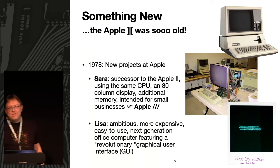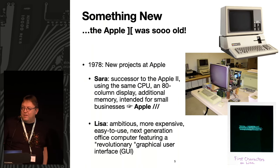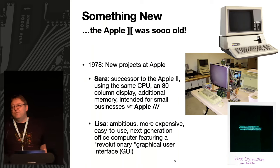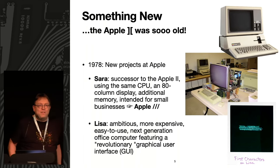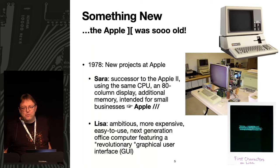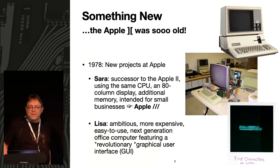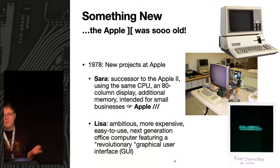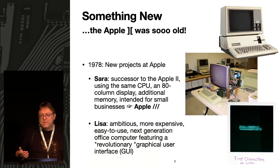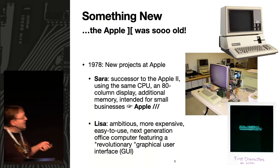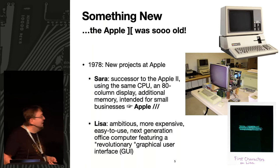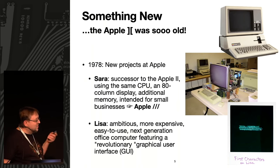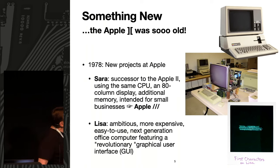Then there was Lisa. If you look at the official Apple explanation, it stands for 'Local Integrated Systems Architecture' — but this is what we call a backronym. Back then Steve Jobs had a daughter out of wedlock, which he never admitted publicly, named Lisa. He didn't even pay child support to the mother, even though he was a millionaire by then. Many people assume Lisa is actually named after Steve Jobs' daughter — we can never know since we can't ask him anymore.